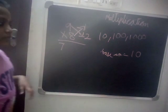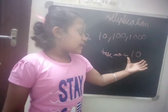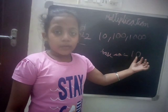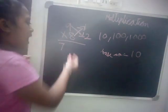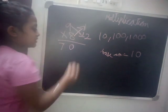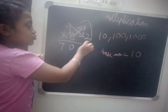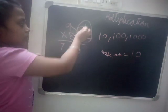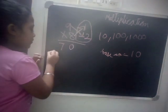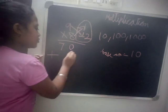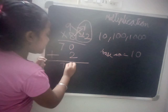The next step: the base number is 10, and in 10 there is one zero, so after the answer write one zero. Now do multiplication of the two remainders: 1 into 2 is 2. So 70 plus 2 is 72.